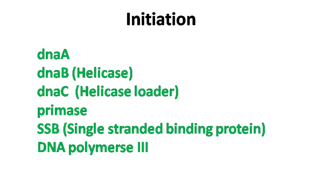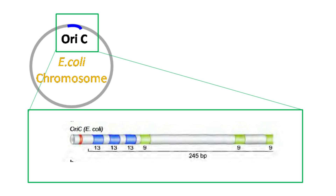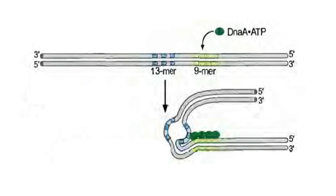Initiation of DNA replication in prokaryotes requires the following proteins: DnaA, DnaB, DnaC, primase, SSB, and DNA polymerase III enzyme. The initiation starts at the oriC on the chromosome. In the initial step, DnaA protein binds a specific nine-mer sequence within the oriC. Only ATP-bound DnaA binds to DNA; ADP-bound DnaA cannot bind. There is also a 13-mer sequence repeat besides the nine-mer sequence. Once the DnaA protein binds the nine-mer sequence, it causes strand separation within the 13-mer repeat.